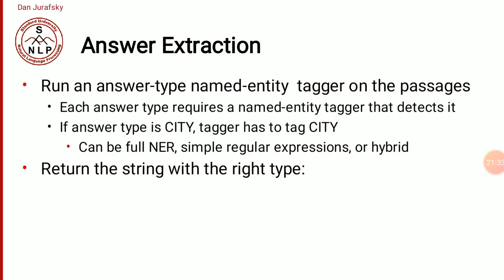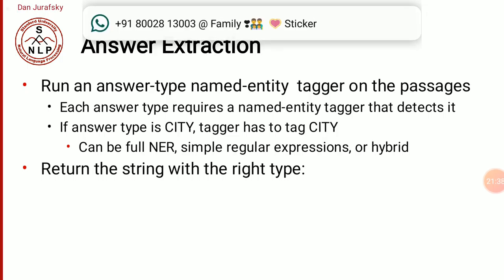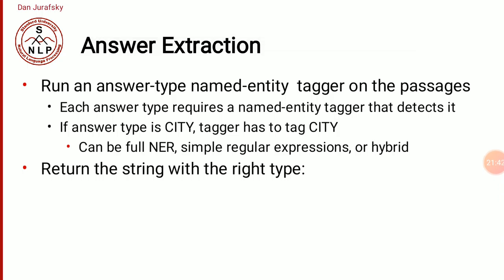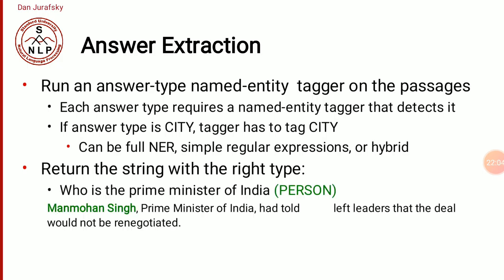In answer extraction, we run an answer type named entity tagger on the passage. Each answer type requires a named entity tagger that detects it — using full NER, simple regular expressions, or a hybrid. For example, for the question 'Who is the Prime Minister of India?' the answer type is person. From a passage like 'Manmohan Singh, Prime Minister of India, had told the Left leader the deal would not be renegotiated,' we detect 'Manmohan Singh' as the answer because it is a person. For a length answer type, the question 'How tall is Mount Everest?' — from a passage stating the official height of Mount Everest, we extract '29,035 feet.'